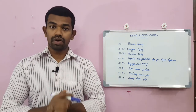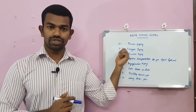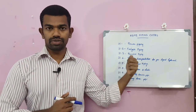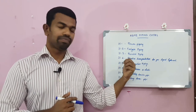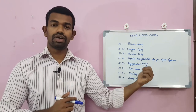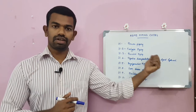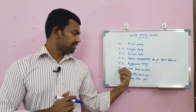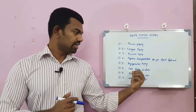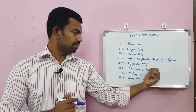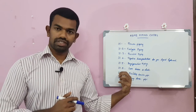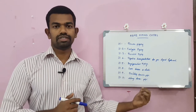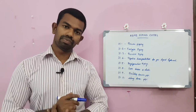ASME piping codes: B31.1 — Power Piping; B31.2 — Fuel Gas Piping; B31.3 — Process Piping; B31.4 — Pipeline Transportation Systems for Liquid Hydrocarbons and Other Liquids; B31.5 — Refrigeration Piping; B31.8 — Gas Transmission and Distribution Piping Systems; B31.9 — Building Services Piping; B31.11 — Slurry Transportation Piping.